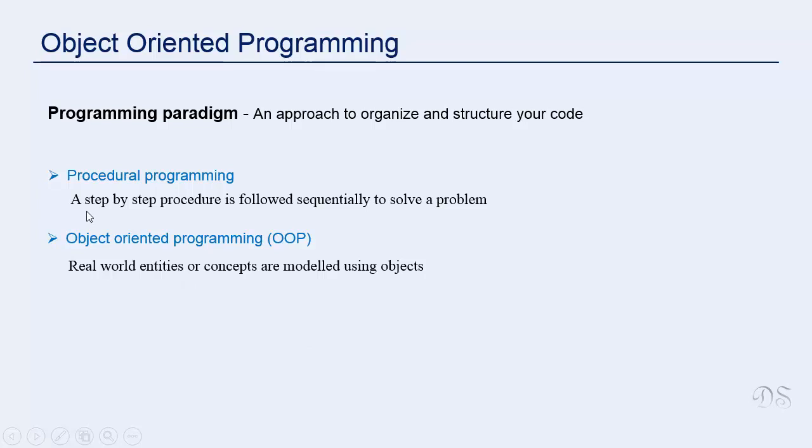In procedural programming, you model your program in terms of functions. And in object-oriented programming, you model your program in terms of objects.